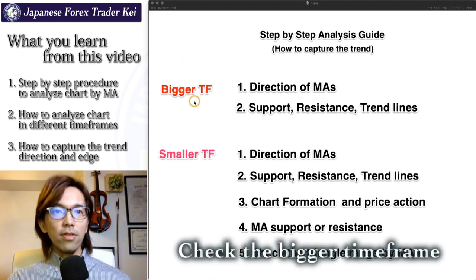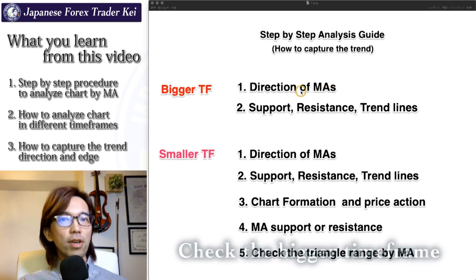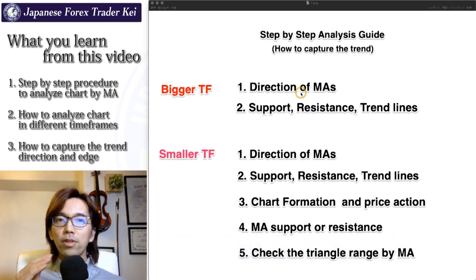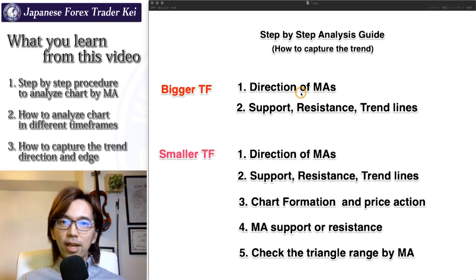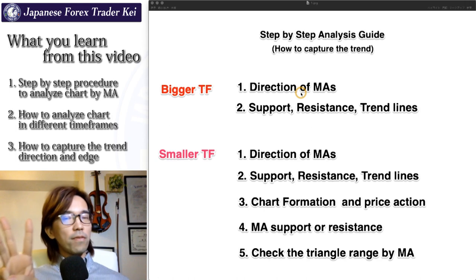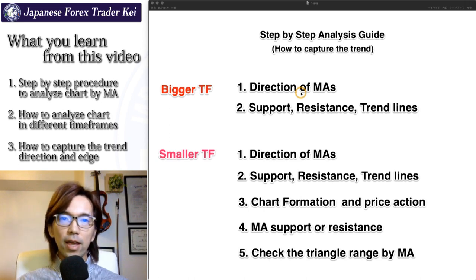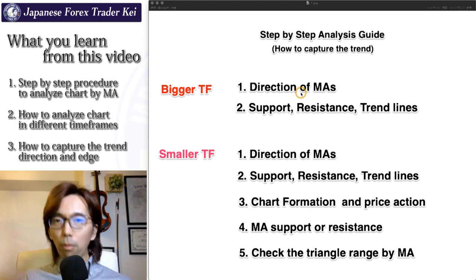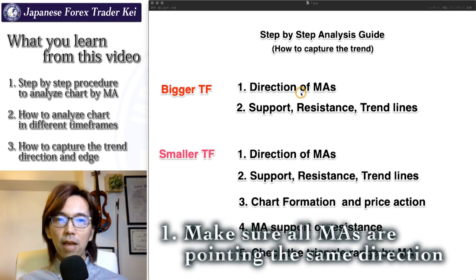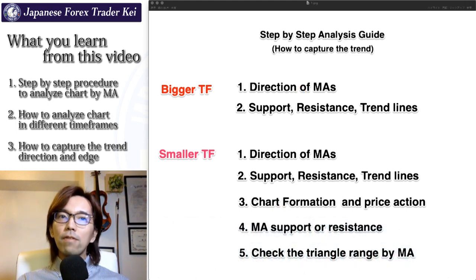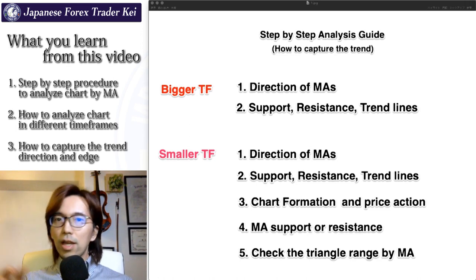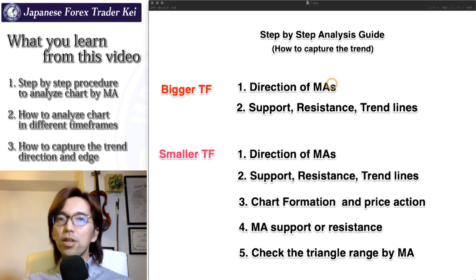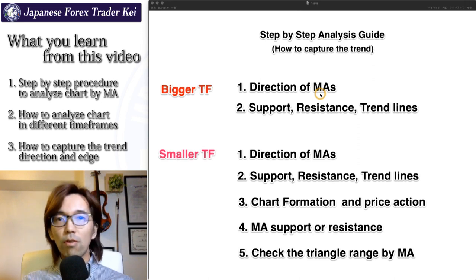What you can check on that bigger timeframe is: first, check the direction of the moving averages, whether they are pointing towards the same direction or not. If you are showing 2 or 3 moving averages like 20, 75, and 200, make sure they are all pointing towards the same direction in the bigger timeframe first, like daily or weekly chart. If they are not pointing to the same direction, that simply means it's not a trade chance. So you have to wait until they all point towards the same direction, or look at other pairs.